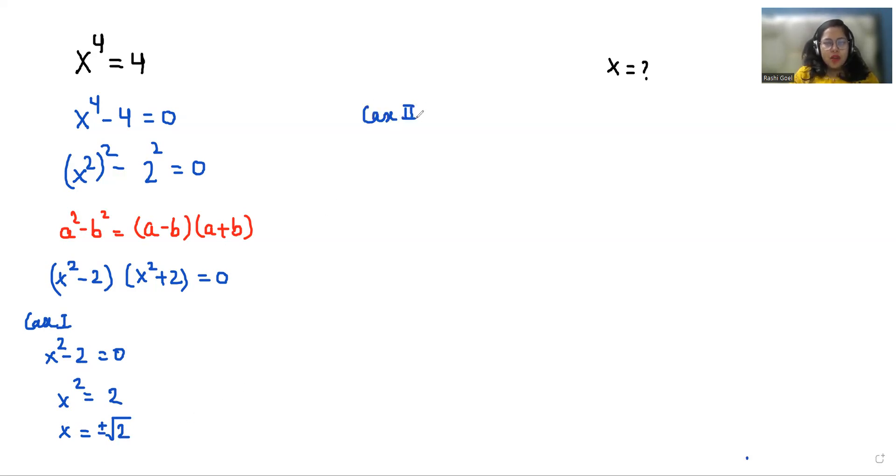when x² + 2 = 0, x² = -2, x = ±√(-2). And we know that √(-1) we can call it as iota (i). So x = ±√2i.